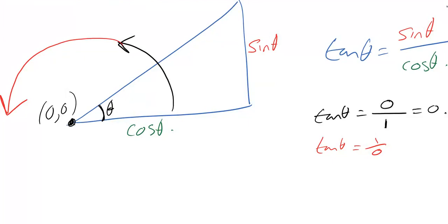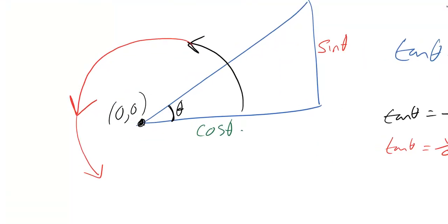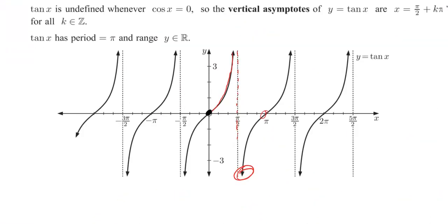This repeats itself in the third quadrant. Once we get around to the third quadrant of the coordinate plane, we're going to have a negative divided by negative and that is going to be positive, which is why we continue exactly as we did in the first quadrant between pi and 3 pi over 2.